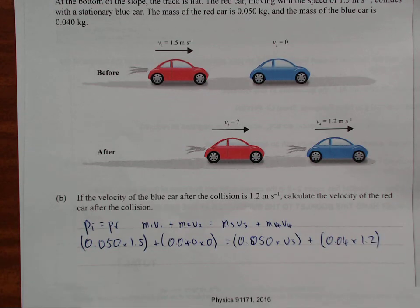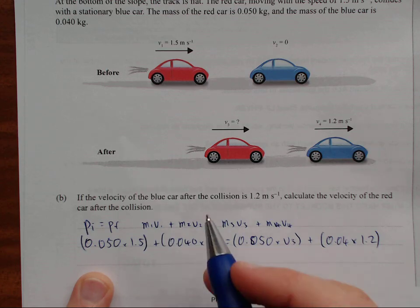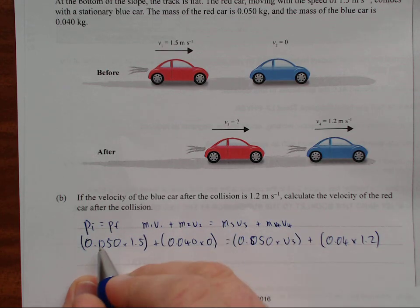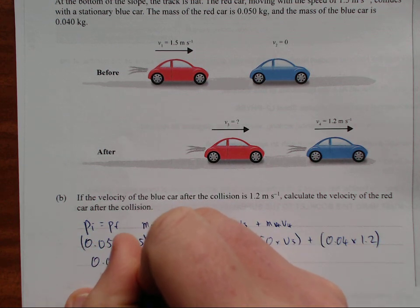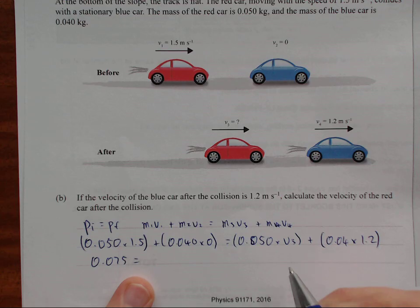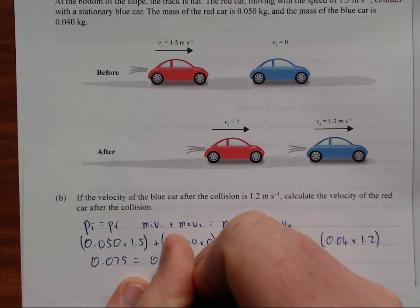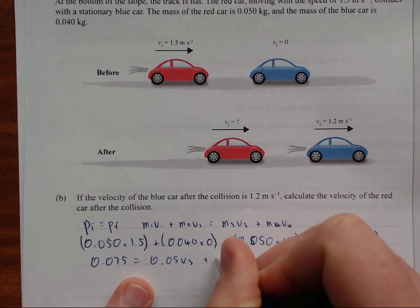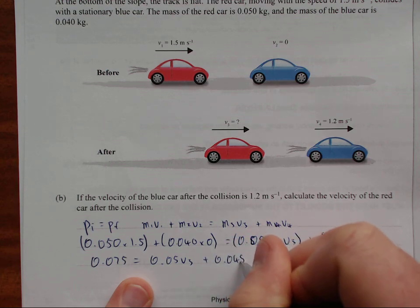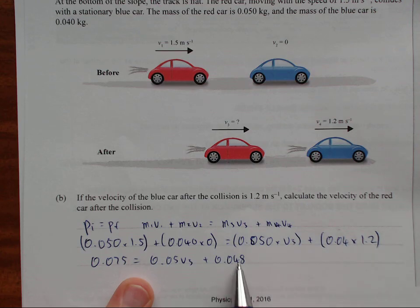So from here, you could easily just calculate everything. You could rearrange, you could plug this into your calculator, use a solver. This is equal to 0, so this is equal to 0.075. So 0.075 is equal to 0.05V3 plus 0.048. So this here is equal to 0.048. I'm going to leave the units out just to save the mess.